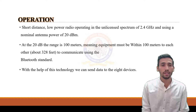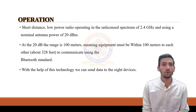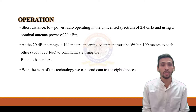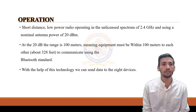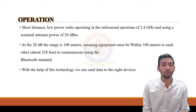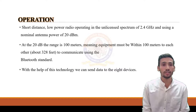The next slide is Operation. The short-distance low-power radio operates in the unlicensed spectrum of 2.4 GHz, using an antenna power of 20 dBm. At 20 dBm, the range is 100 meters, meaning equipment must be within 100 meters of each other to communicate using the Bluetooth standard. With the help of this technology, we can send data to 8 devices.